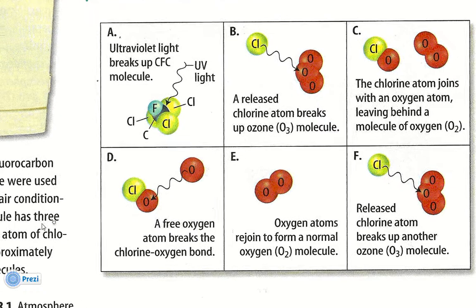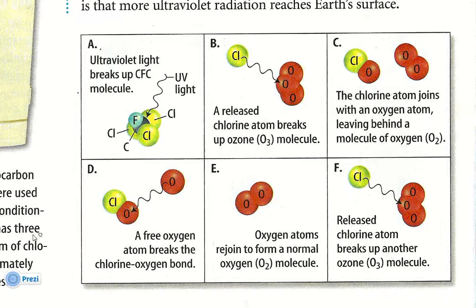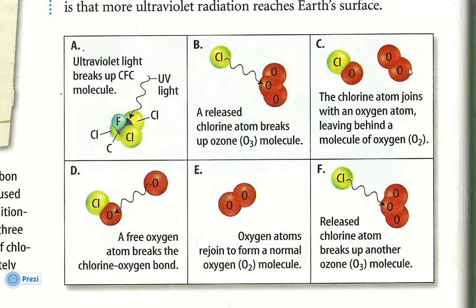One atom of chlorine can break apart approximately one hundred thousand ozone molecules. How does that happen? The ultraviolet light breaks up the CFC — it's chlorine and fluorine. The chlorine atom breaks up one ozone molecule, connecting with one of the oxygen atoms and leaving a two-oxygen molecule, which is what we breathe. So it turns the ozone into something we can breathe, but that is not what we want — we need the ozone to protect us. You need to understand this diagram.